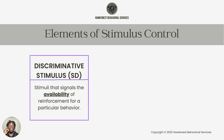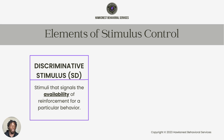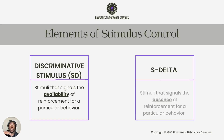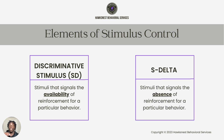Let's talk about some elements of stimulus control. The first element is the discriminative stimulus. Discriminative stimuli are stimuli that signal the availability of reinforcement. Then you also have stimulus deltas — S-deltas — which are stimuli that signal the absence of reinforcement for a particular behavior.